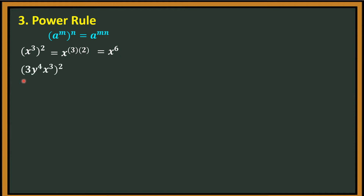Another example: the quantity of 3y raised to the fourth power, x cubed, quantity squared. We have an exponent outside the parentheses. All you have to do is distribute it inside one by one. So we will have 3 squared, y raised to the fourth power times 2, x cubed times 2. Simplifying: 3 squared is 9; y raised to the 4th times 2 is y raised to the 8th; x cubed times 2 is x raised to the 6th. So the final answer is 9y to the 8th, x to the 6th.